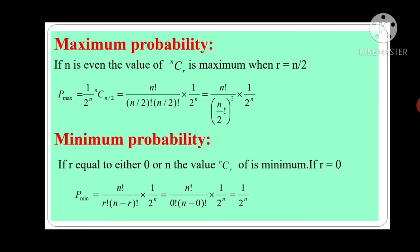Now, we will see what is maximum probability. If n is even, the value of nCr is maximum when r equals n by 2. So, P_max equals 1 upon 4 raised to n into nC(n/2), which gives n factorial upon n by 2 factorial into n by 2 factorial, into 1 upon 2 raised to n.